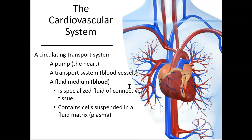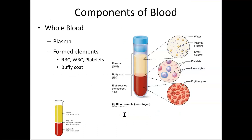Blood is actually connective tissue — you might remember that from AMP1. Connective tissue always has a matrix and cells. The cells are the white blood cells, the red blood cells, and the platelets, and they're inside the plasma, which is the matrix.